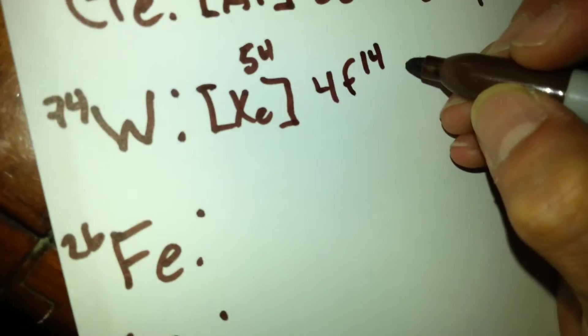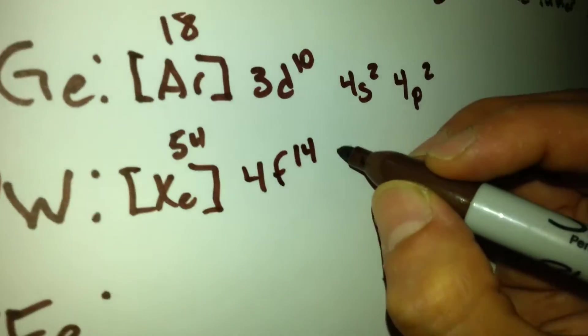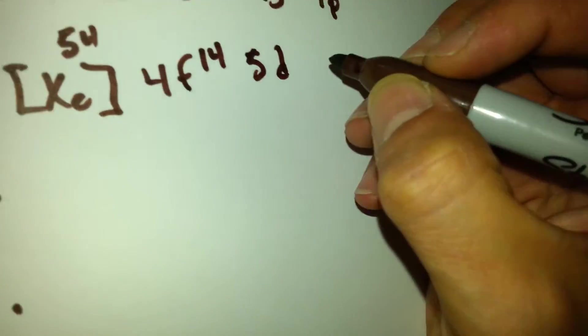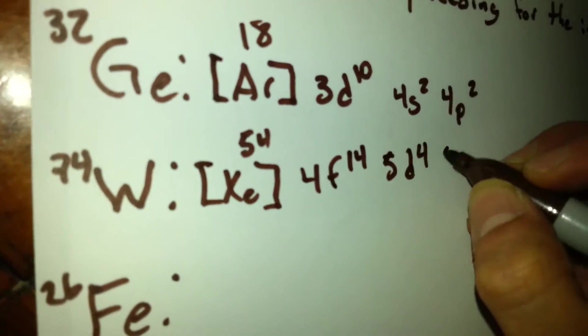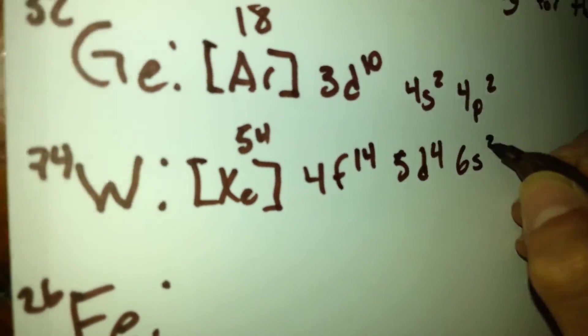After that, we go to 5d with a total of 4. And finally, the 6s with a total of 2.